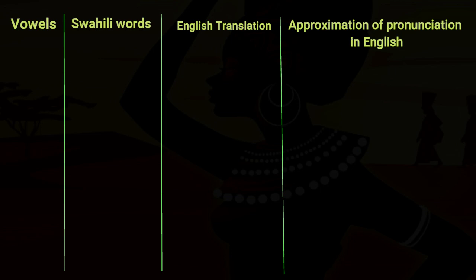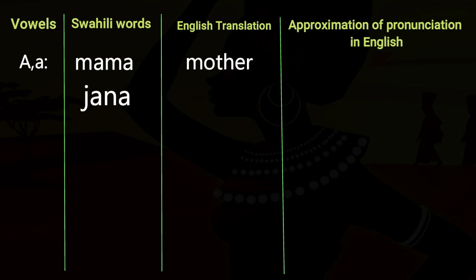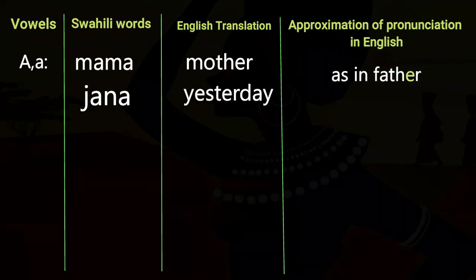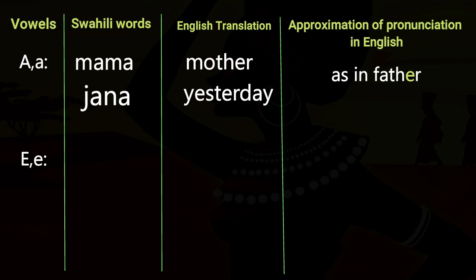The first vowel is A, in words like 'mama' meaning Mother, and 'jana' meaning Yesterday — pronounced as in 'Father'.